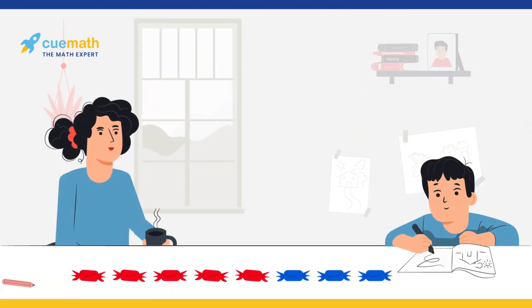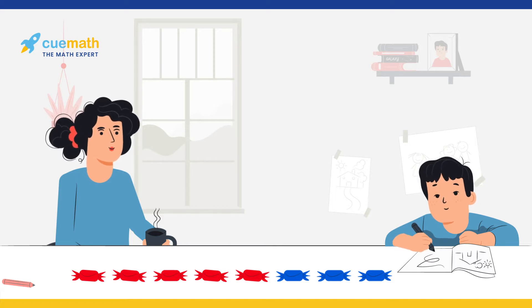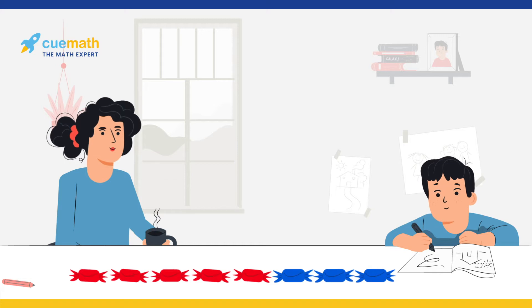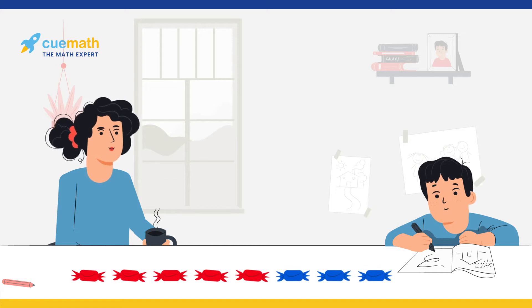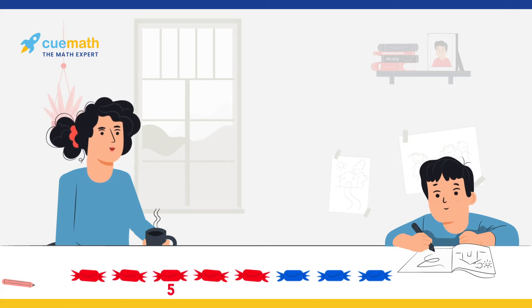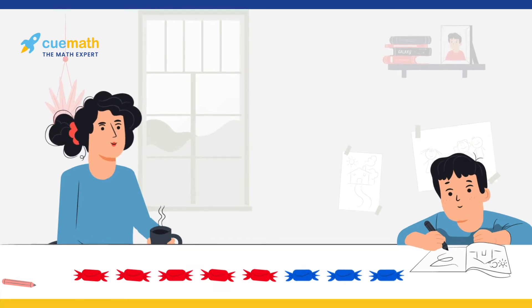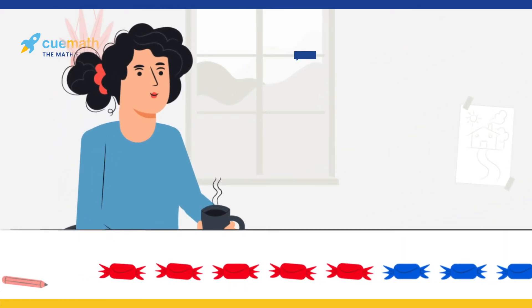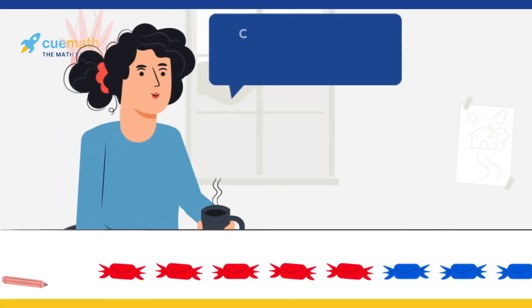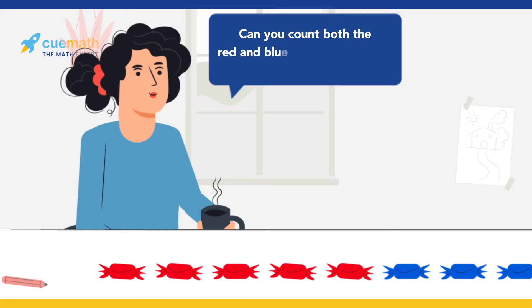Ben's mother gave him two different flavours of his favourite candy. The candies were in the colours red and blue. She tells him that there are five red candies and three blue candies. His mother now asks him to count candies of both the colours together.